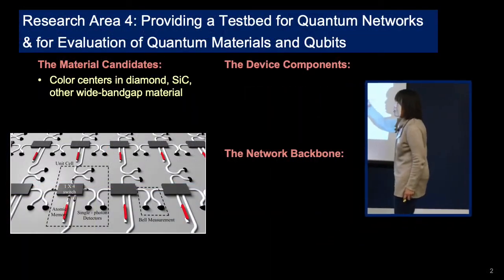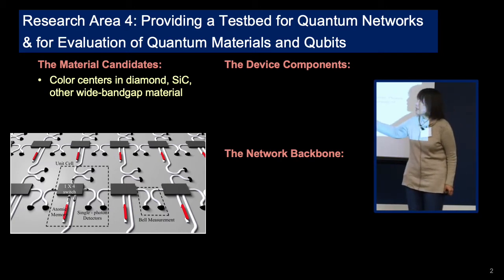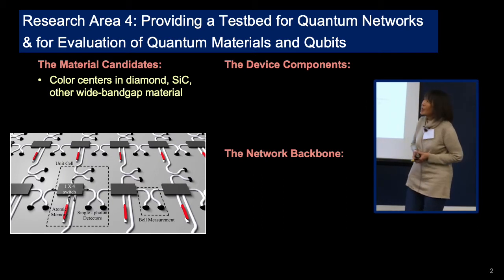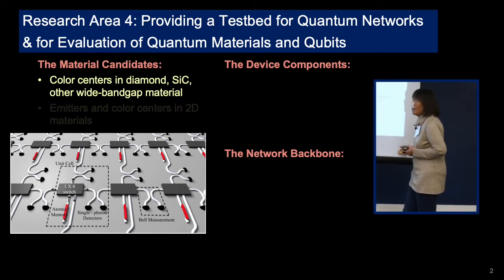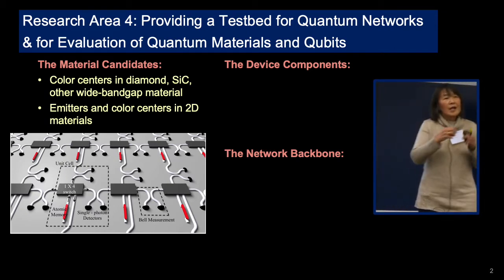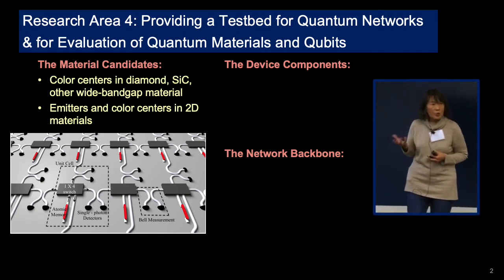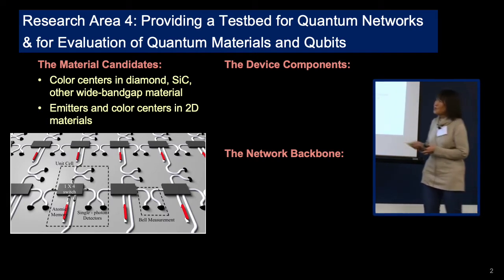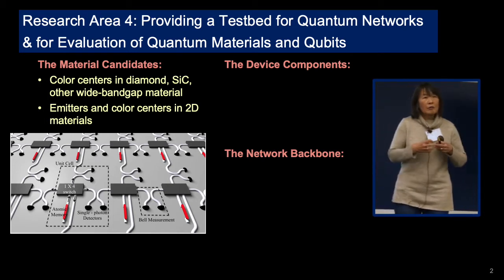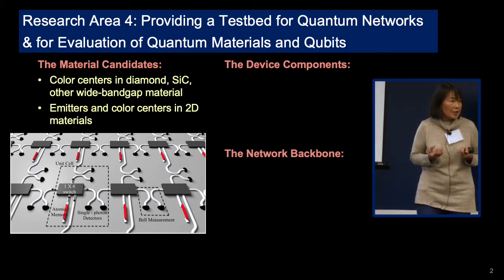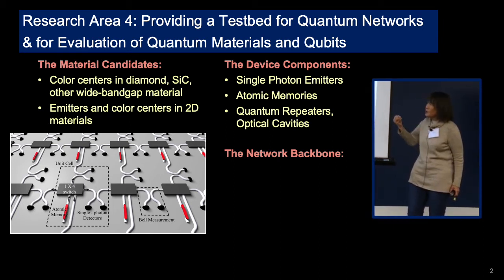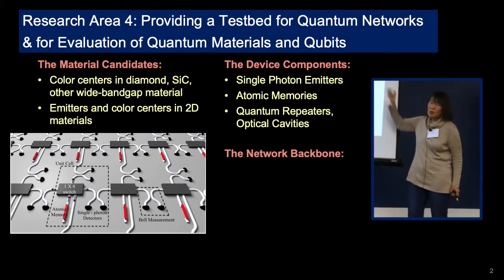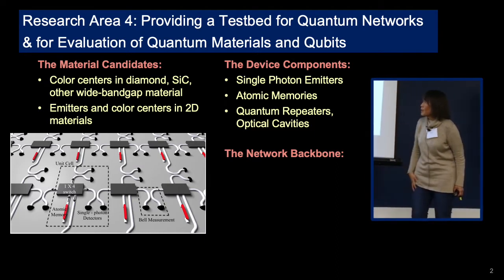So it has three major components. One component is the material candidates, beginning with the materials that defined our inception — the NV centers in diamond — broadening out to different kinds of color centers in diamond and silicon carbide variety of other materials. We're now extending the notion of those defect-based quantum emitters into 2D materials. With all of these materials we began very early to not only characterize the behavior of the emitters themselves, but to put those emitters within a framework — integrating color centers so they could perform as single photon emitters, developing them as atomic memory, device components of the network, and also as quantum repeaters and optical cavities.